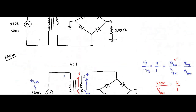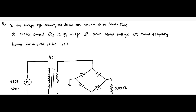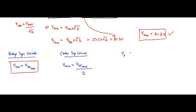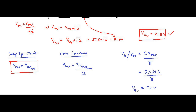Now we determine the required parameters. The DC output voltage: V_DC or V_average equals 2 × V_max divided by π. V_max is 81.3 volts, so it is 2 × 81.3 divided by 3.14, which comes to approximately 51.7, rounding off to 52 volts. So the DC output voltage is 52 volts.